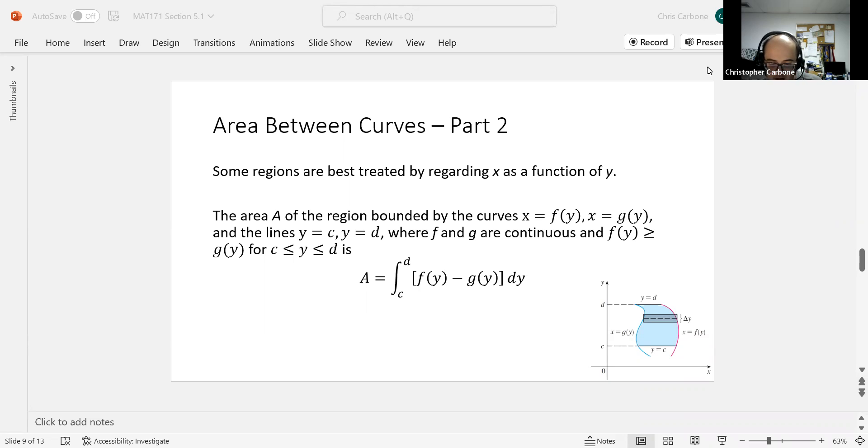We can see that going on in our picture here. We have x equals g of y as the blue curve, x equals f of y as the pink curve, and c and d to show that region with that delta y in there to denote that rectangle.